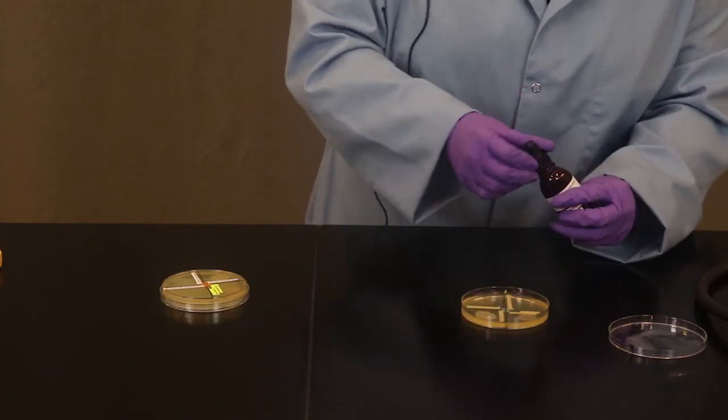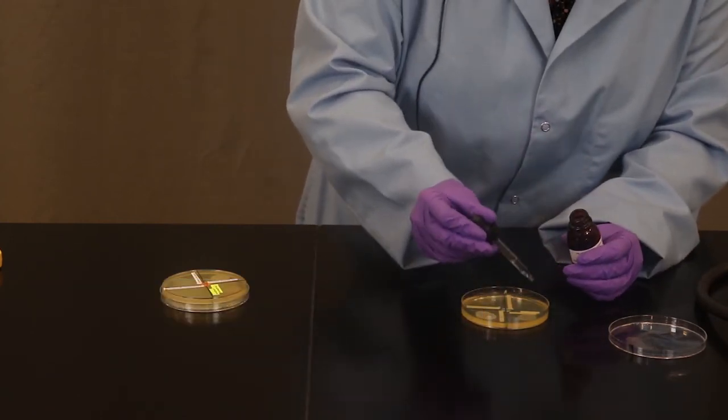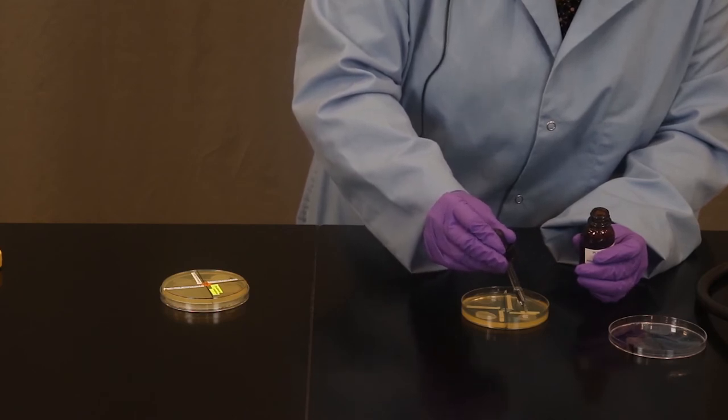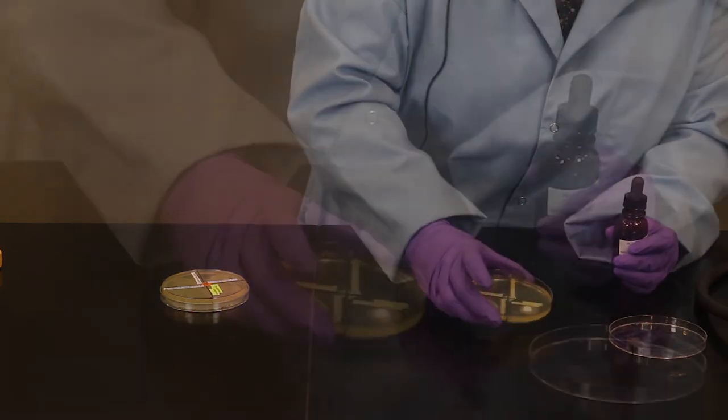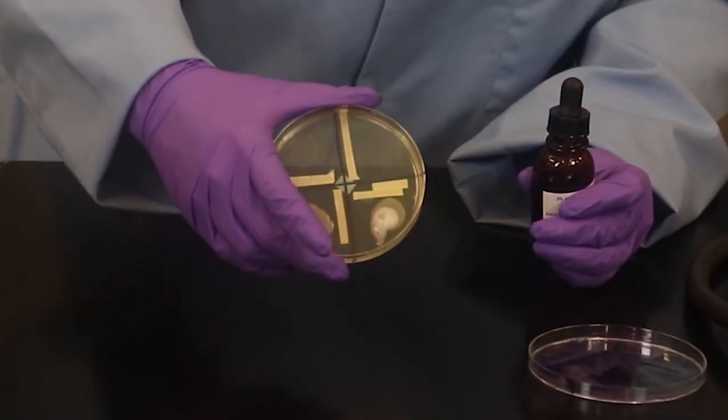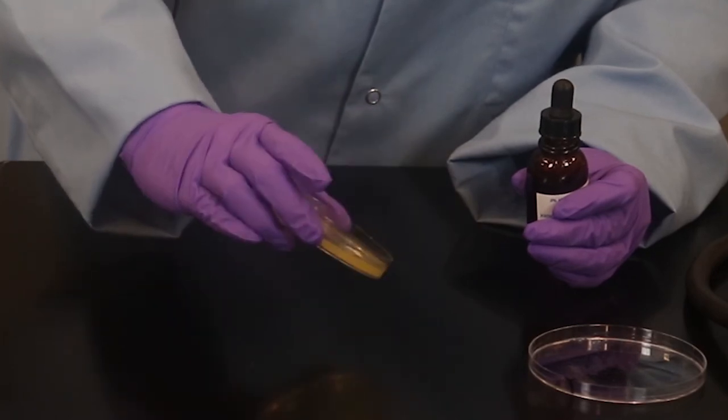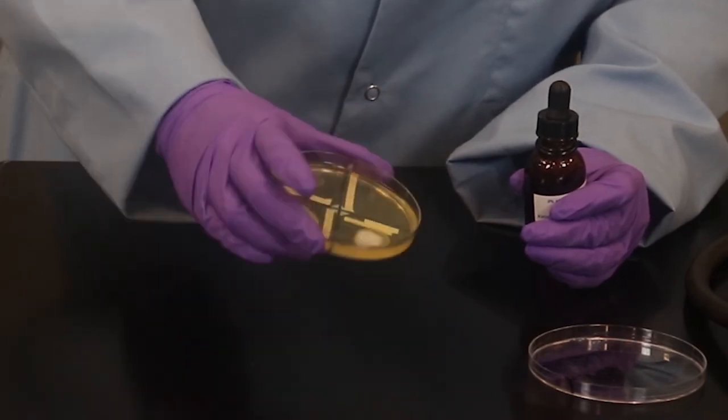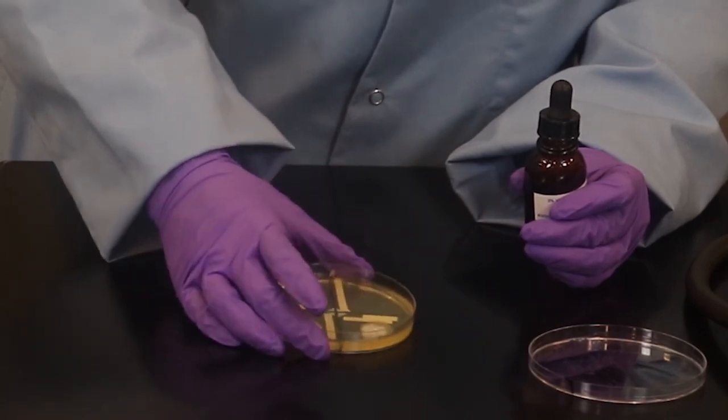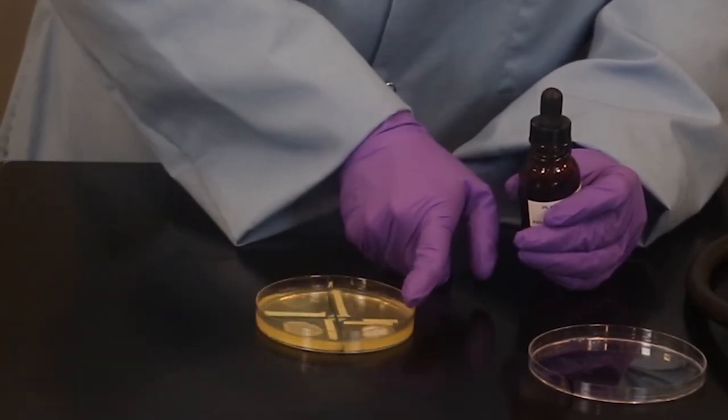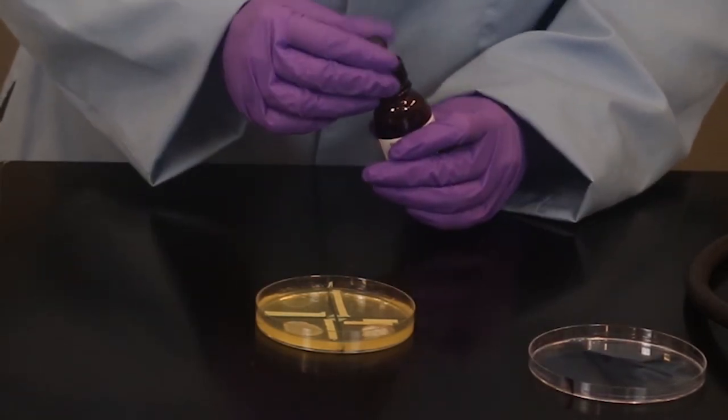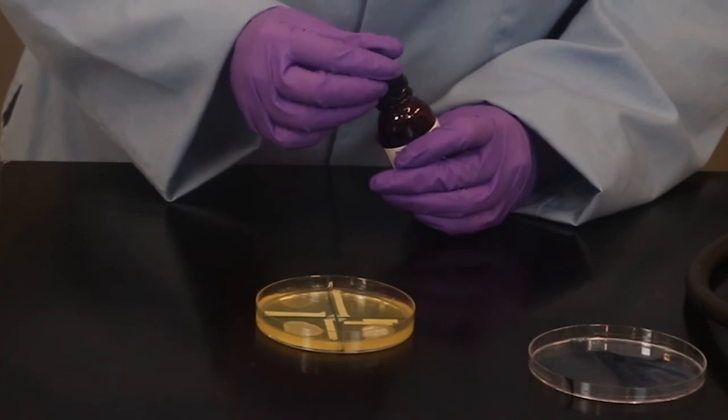And all I'm going to do here is take my hydrogen peroxide and place a drop, a couple drops. I don't know how good you guys can see this, but there's lots of bubbling. When we see the presence of lots of bubbling, that indicates that catalase is present. It makes sense because Pseudomonas grew aerobically, and it has the catalase enzyme. And that helps protect it in an oxygen environment.